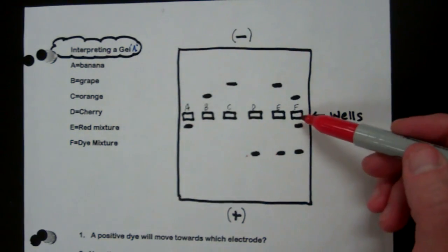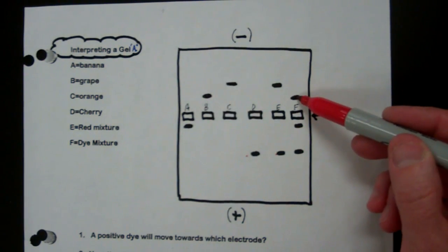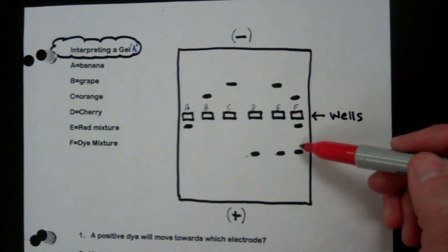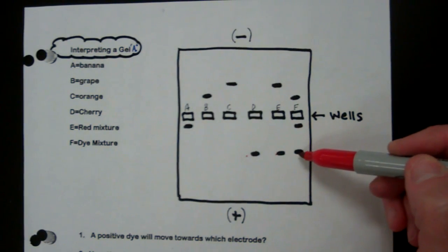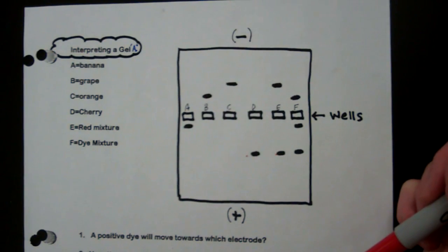So now let's look at F. F is a dye mixture just in general. What's in it? So we've got a mark here, here, and here. So tell me, what is in the dye mixture?